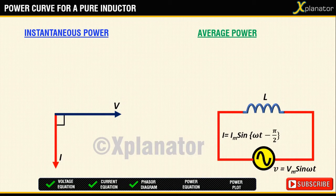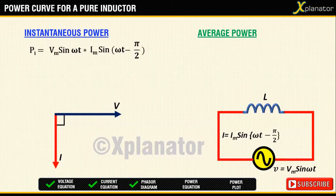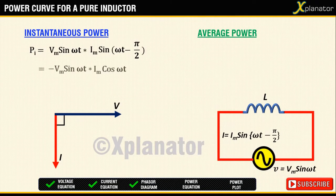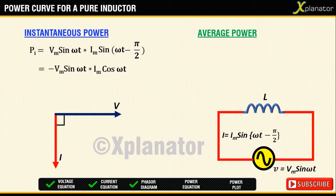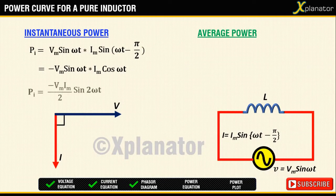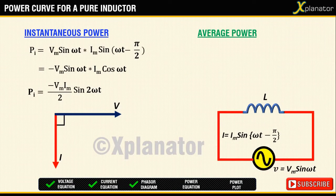For instantaneous power, you use the equation P equals V into I. Substituting the values for voltage and current, you get P equals minus of Vm Im sin ωt into cos ωt. Using half angle formulae, it can also be reduced to P equals minus of Vm Im sin 2ωt upon 2.